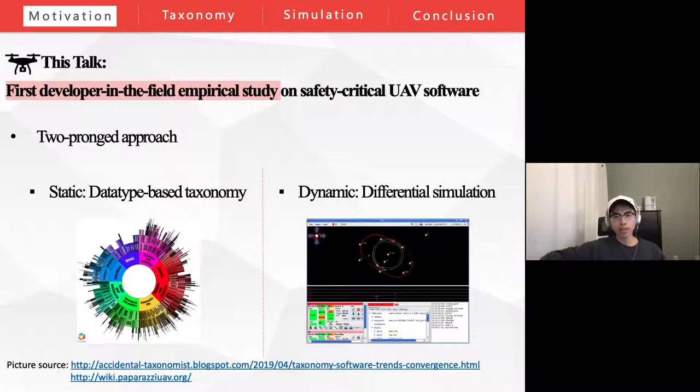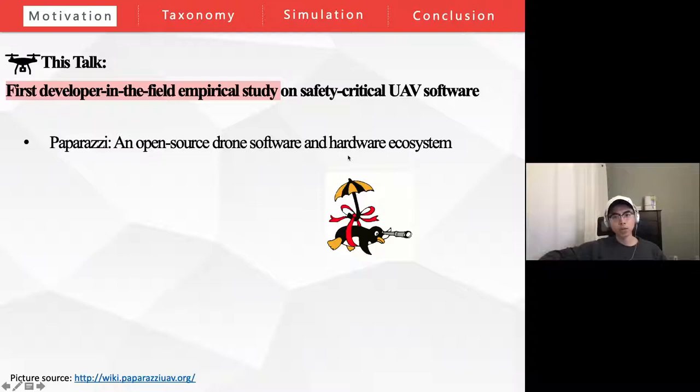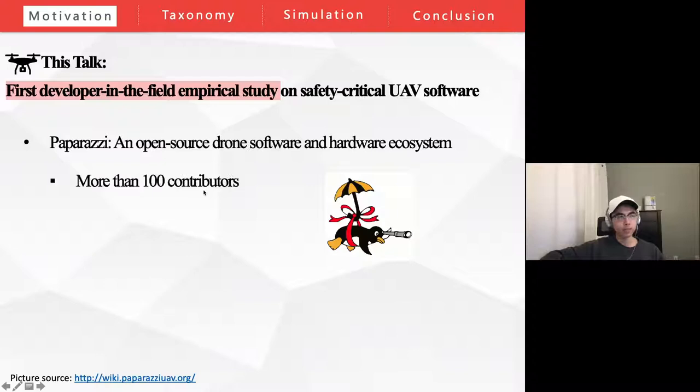At the bottom right is a picture of the paparazzi simulator that we use for the differential simulation. As the software framework serving as the focus of our empirical study, paparazzi is an open-source UAV project that provides unified software support from autopilot to ground station, with diverse support for multi-copters, fixed-wing, helicopters, and hybrid aircraft. More than 100 developers are actively contributing to this project, and it now has more than 4,000 files and 350,000 lines of code.